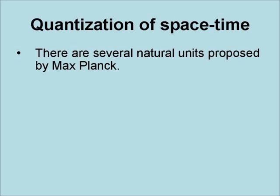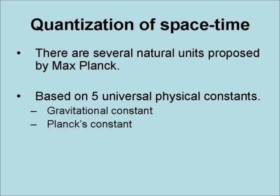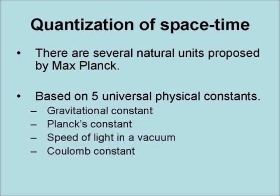There are several natural units that were proposed by Max Planck. They are based on five universal physical constants: the gravitational constant, Planck's constant, the speed of light in a vacuum, the Coulomb constant, and Boltzmann's constant.